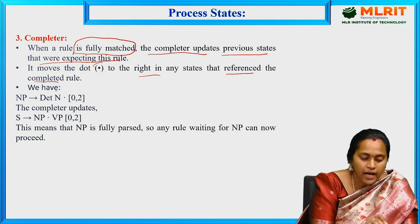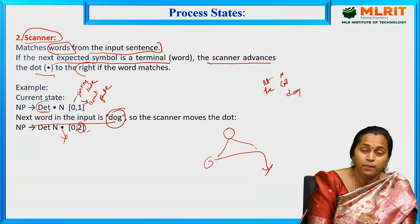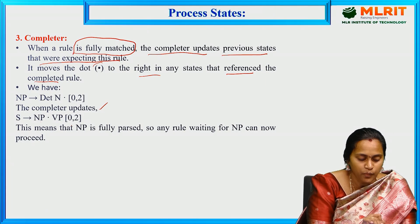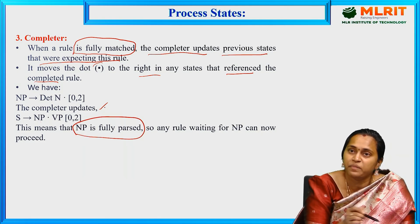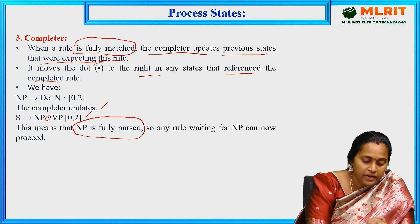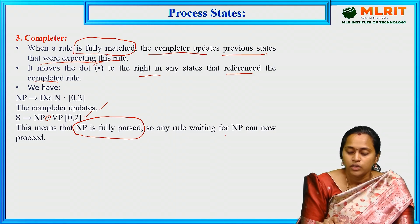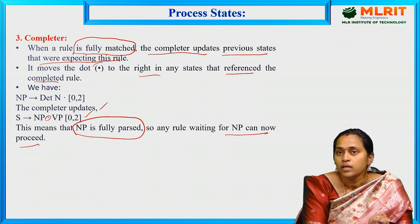For example, we have NP at position (0,2) - j value is 2. The Completer updates: the sentence contains noun phrase and verb phrase. That means the noun phrase is fully parsed and the sentence is completed. Combining both noun phrase and verb phrase - noun phrase is completed. This is the meaning of the process states: Completer, Scanner, and Predictor.